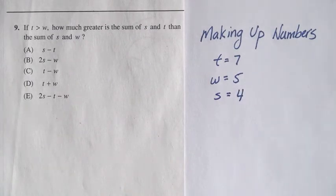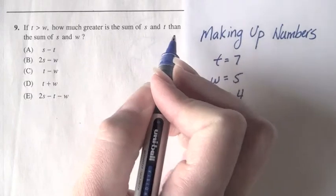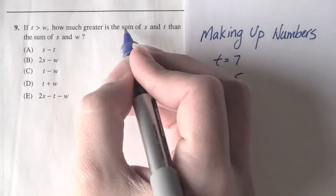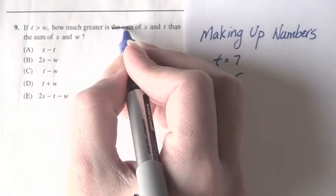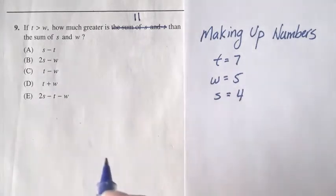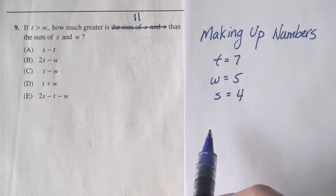Okay, now that we've made up our numbers, let's just solve the problem. How much greater is the sum of s and t? Well, what is the sum of s and t? It's 11. So, I'm actually going to totally replace that with 11. Then the sum of s and w. Well, what is the sum of s and w? It's 9.